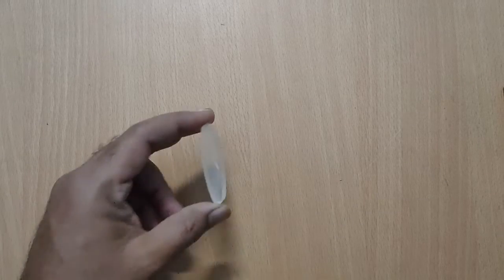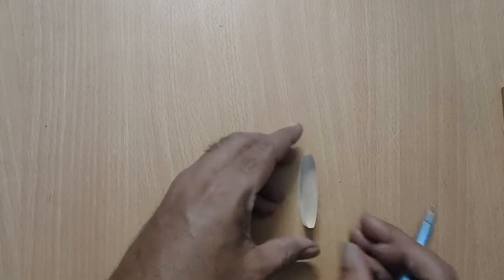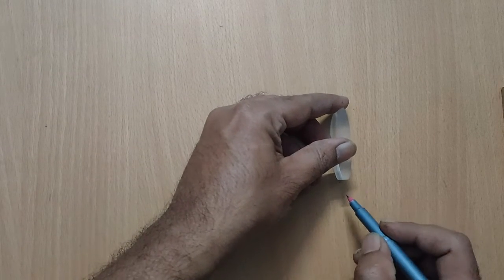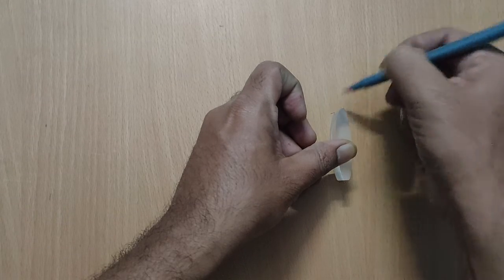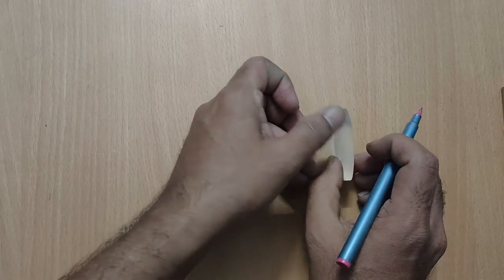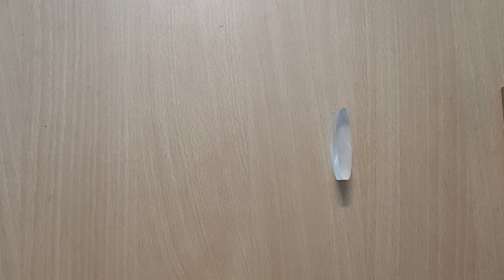Now let us do the activity. Take the convex lens, place it on a white cardboard and mark two lines so that the lens may not change its position.